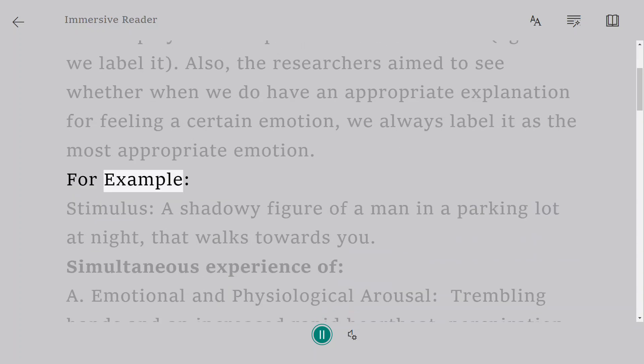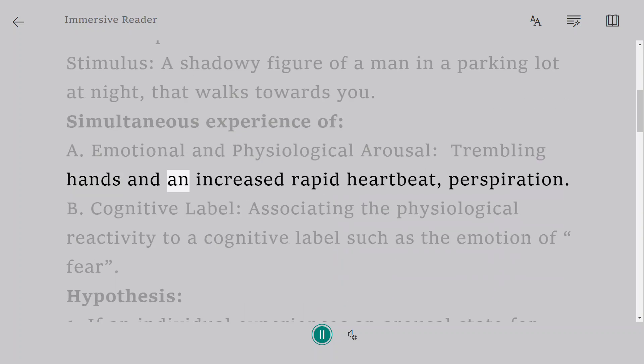For example: Stimulus - a shadowy figure of a man in a parking lot at night that walks towards you. Simultaneous experience of emotional and physiological arousal: trembling hands and an increased rapid heartbeat, perspiration.